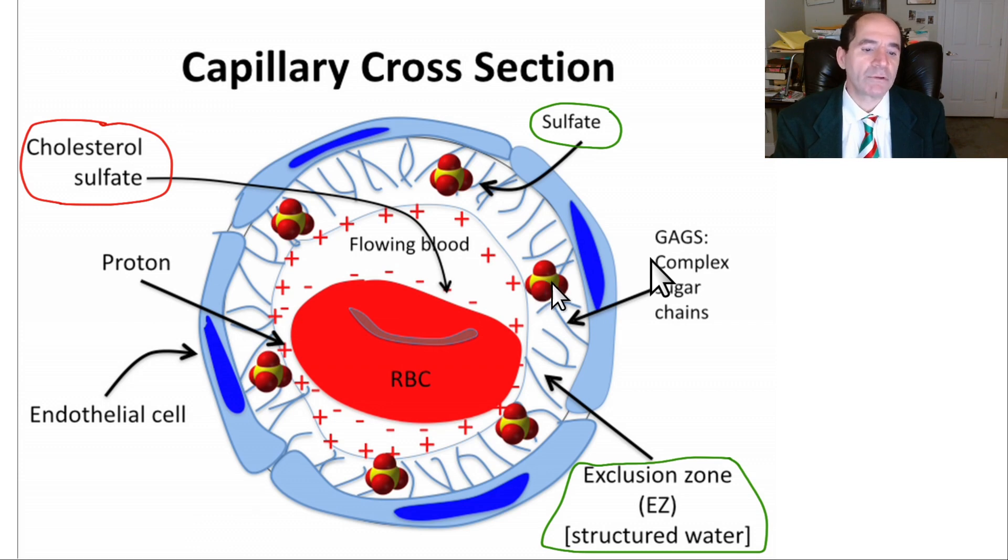What contributes to the negative charge of the zeta potential? Cholesterol sulfate also does - the sulfur with four oxygen molecules. In addition, there's something called exclusion zone water or EZ water, which is like a gel form of water, largely induced by the sulfates. That has a negative charge associated with it, as do the sialic acids.